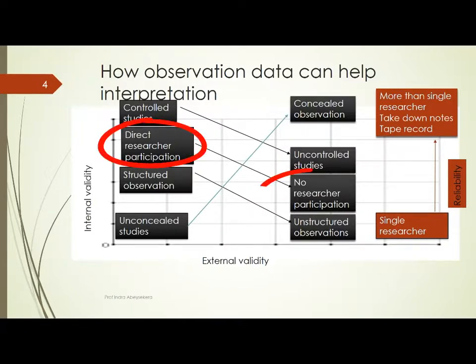Direct research participation versus no researcher participation is another dimension. When researchers directly take part in the study and get involved in the phenomena, internal validity could be quite high because the researcher can see what's really happening. When the researcher does not take part in the study, there is distance between the data and the researcher, and therefore the researcher will not bring personal bias and errors into the data. External validity increases when the researcher does not take part directly, whereas internal validity increases when the researcher directly participates.